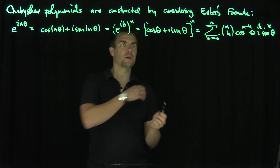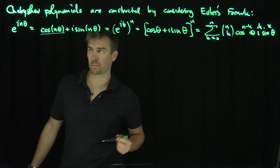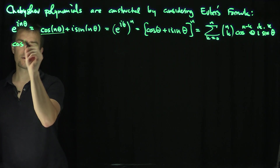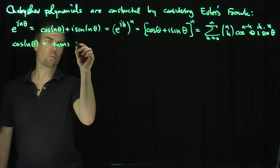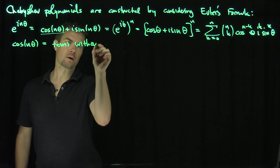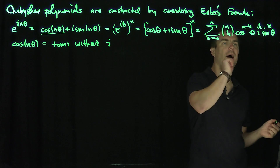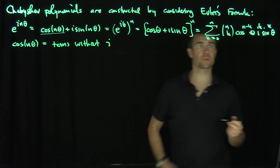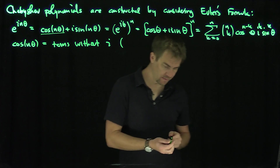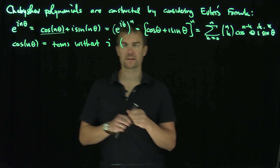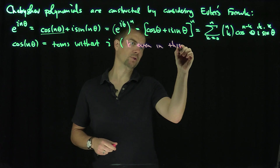We want only the terms without i, which give us cosine(n·theta). Those are the terms where k is even, because i^k is real only when k is even. So cosine(n·theta) comes from the even-k terms in the binomial expansion.